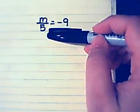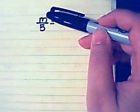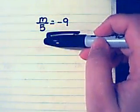To get rid of this division, I need to do the opposite of dividing, which is multiplying. So to get rid of m divided by 5, I'm going to multiply by 5.